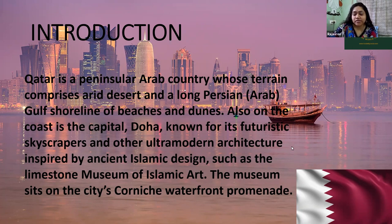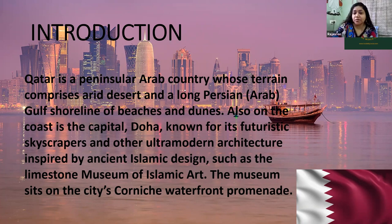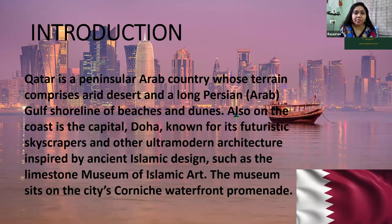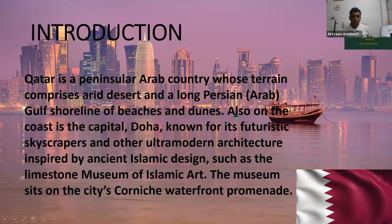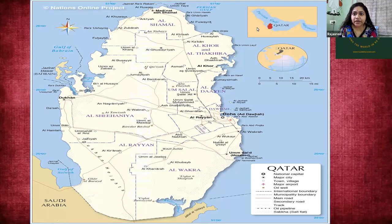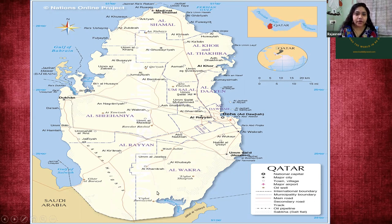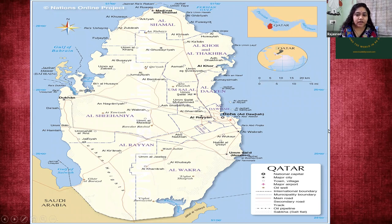A promenade is a waterfront — it's like a sidewalk in front of water bodies where there is space for people to walk on. This is where Qatar is located. It's very small on the globe. There is the Gulf of Oman, and this is Qatar. The red area is Qatar, and this is the bigger picture — a bigger diagram of how the country looks. There are many provinces and the national capital is Doha, located on the coast.